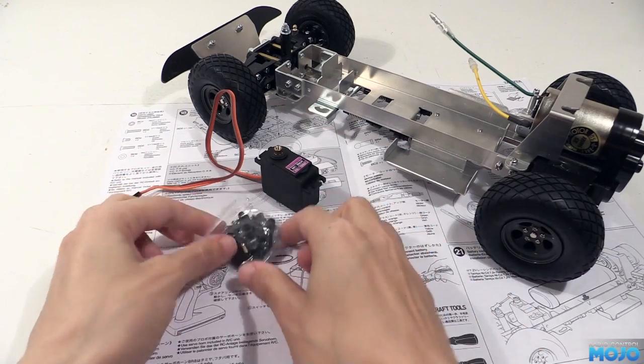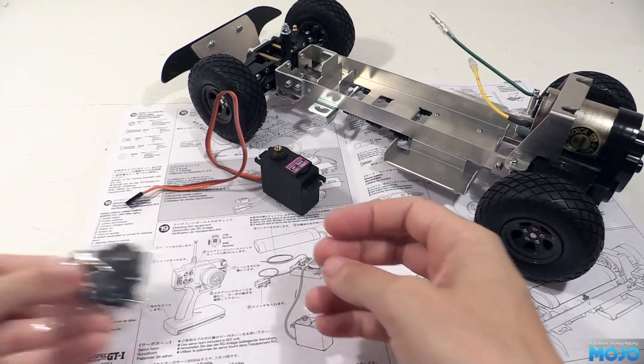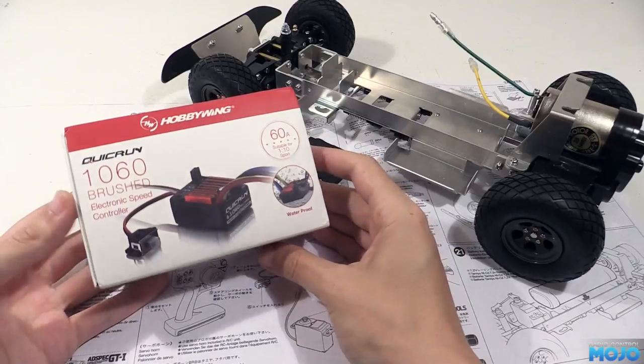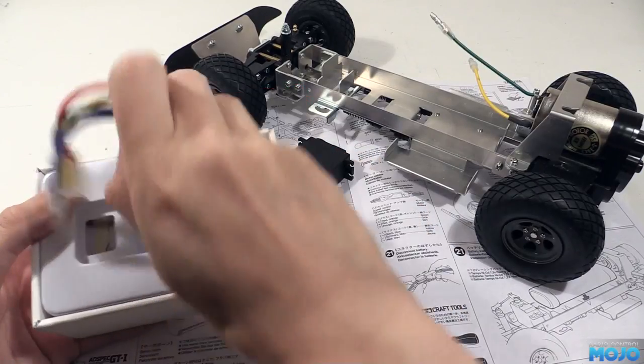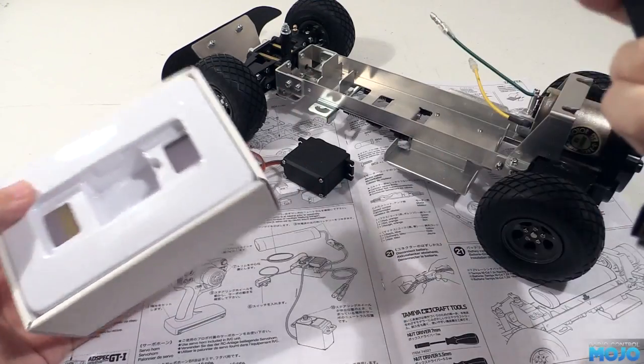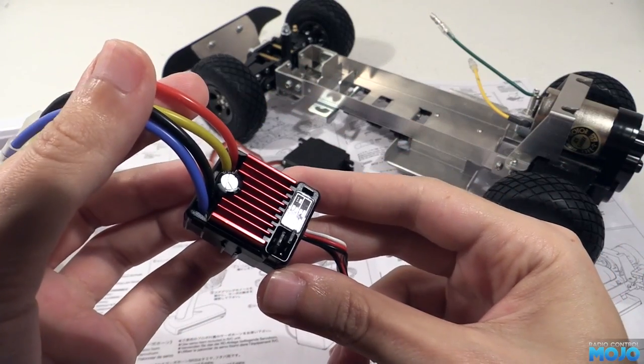I'm not expecting much, but as long as it centres up OK, it's going to be just fine. For the ESC, I've got a Hobbywing 1060 brushed. Like the servo, it's fairly low cost at about £15. A slight step up from the unbranded ones, it should do nicely.